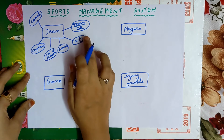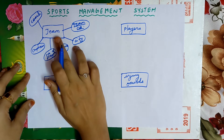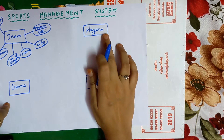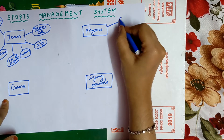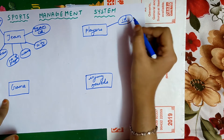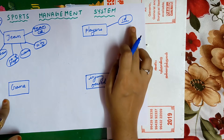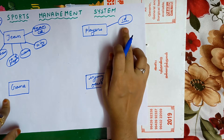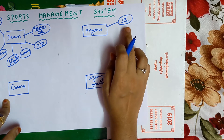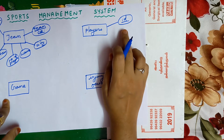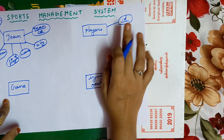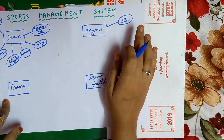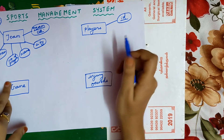These are all the attributes of the team entity. The next entity is players, so let us look into its attributes. A player will have a player ID, which must be underlined. Every player is given a unique ID — if one player's ID is 2, no other player will have the same ID.